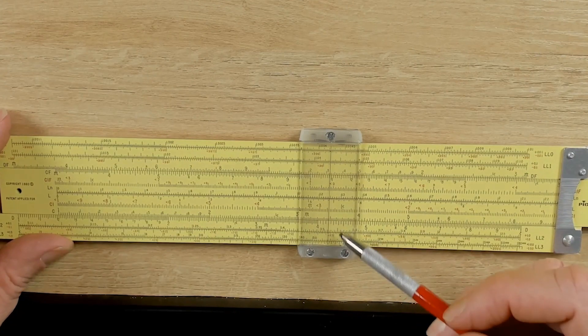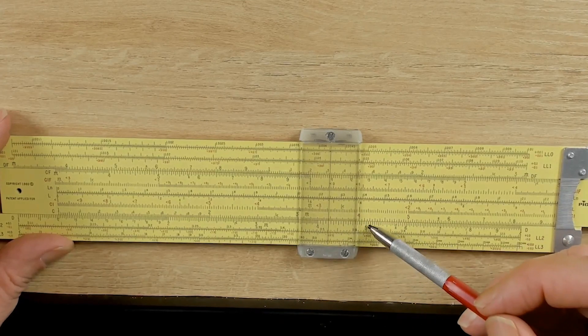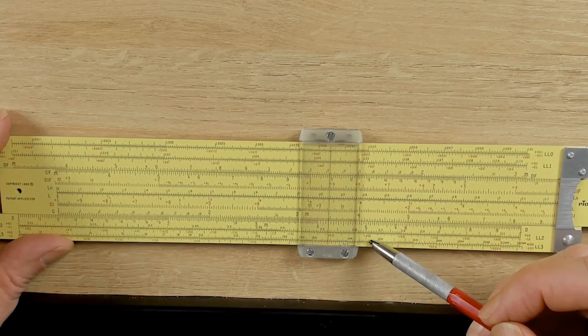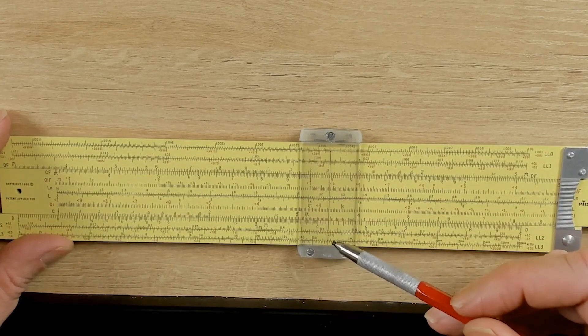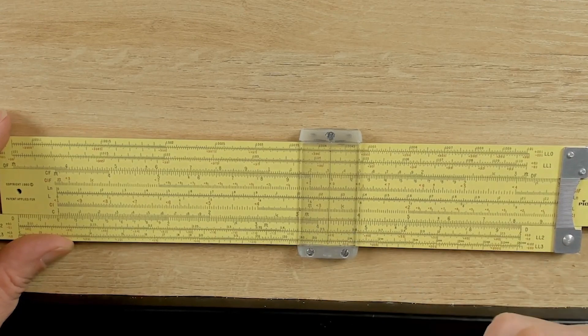Now, what is that? Remember, we switched the scales. We went from the LL2 scale down to the LL3 scale, so there's a change in a factor of 10. So that's 34,700 years.